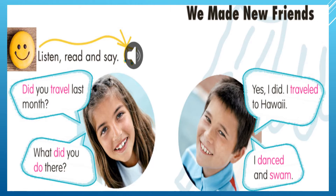Revisamos entonces que tenemos el tiempo pasado simple. Did you travel last month? Auxiliar did. En la pregunta, si tenemos el auxiliar did, el verbo se conserva en forma base. Por eso tenemos: Did you travel last month? Yes, I did. I traveled — está en tiempo pasado simple. What did you do there? ¿Qué hiciste allá? Nuevamente tenemos el auxiliar did y el verbo en forma base. I danced and swam. Danced: bailé. Swam: nadé.